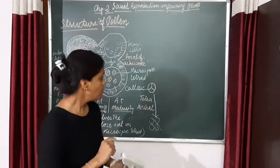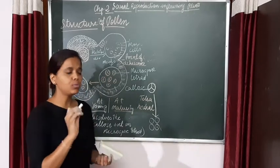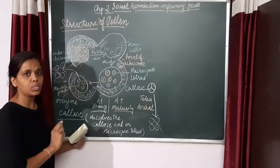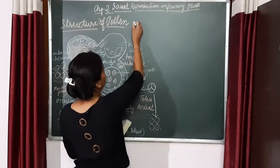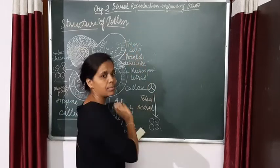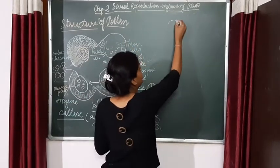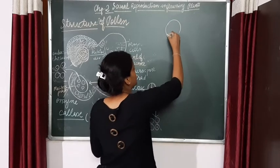Now I am going to tell you something about the structure of this microspore. The structure of a pollen, or we can say the microspore, it is a double-layered structure.